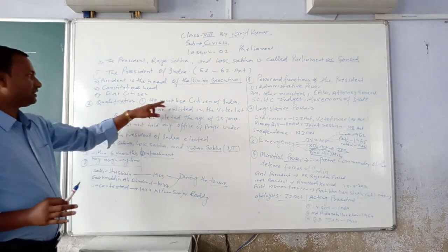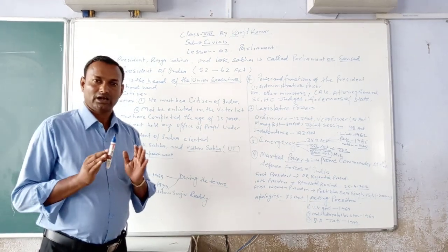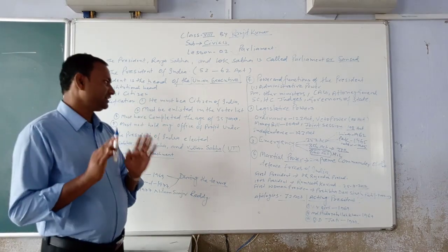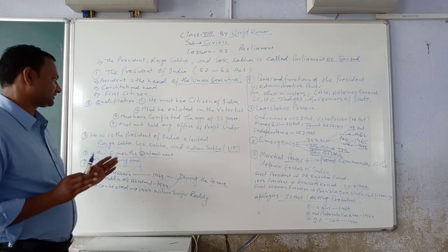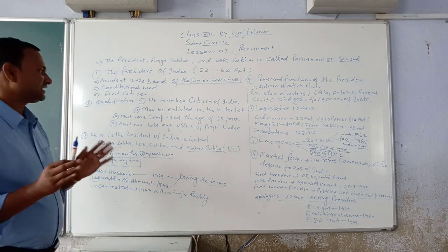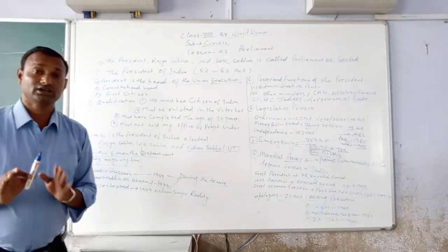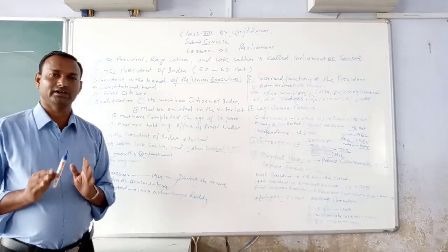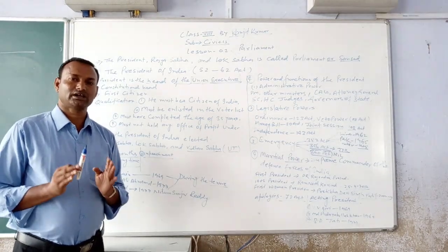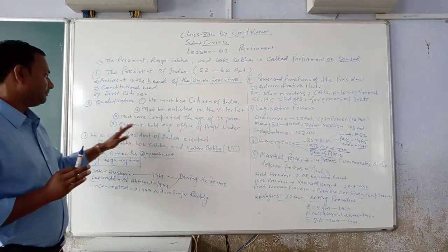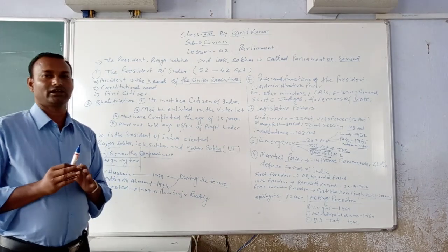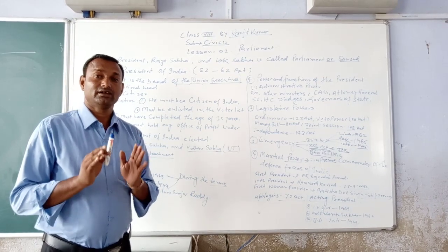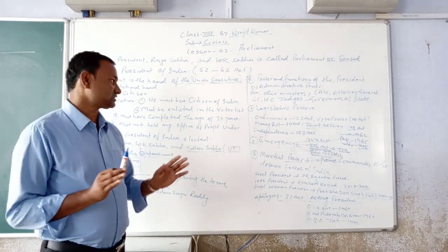Next topic: qualifications. First, he must be a citizen of India. Second, must be included in the voter list. Third, must have completed the age of 35 years. And fourth, must not hold any office of profit. These are the qualifications for the President's election.